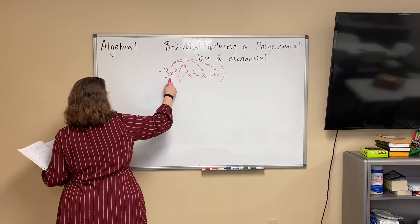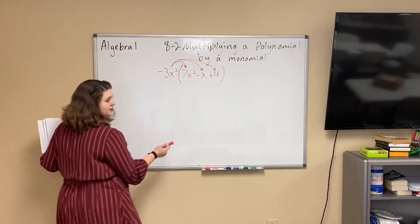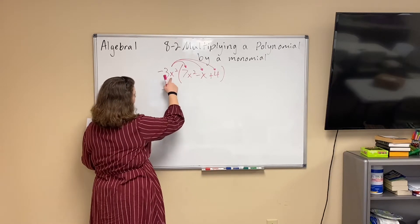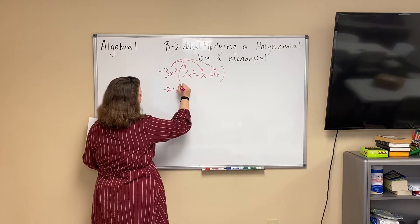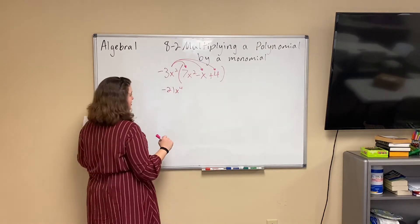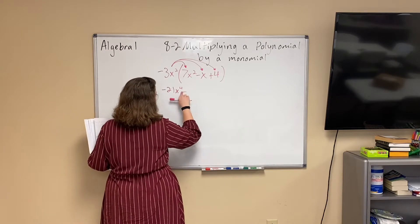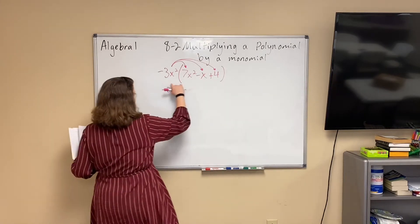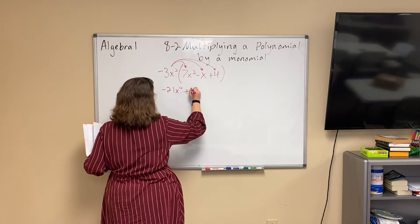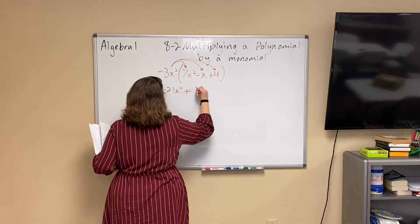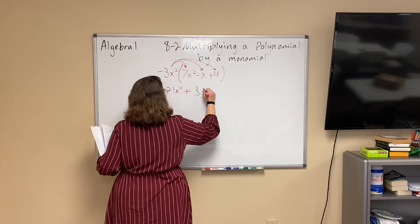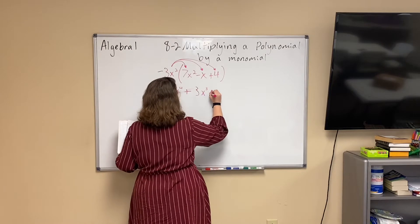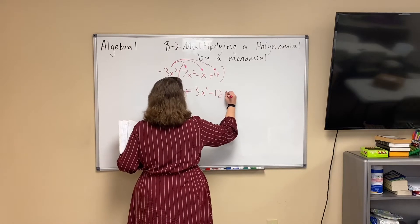So we're going to do negative 3x squared times 7x squared. We do negative 3 times 7, which gives us negative 21, and x squared times x squared gives us x to the 4th. Then negative 3x squared times negative x — a negative times a negative gives us a positive. We don't have a coefficient, so we keep the 3. x squared times x gives us x to the 3rd.